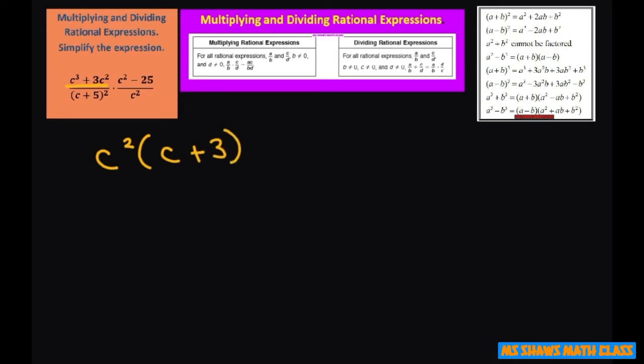Remember when you're factoring it's like dividing but you're not losing the divisor. So basically what you're doing is you're asking yourself, what can you divide these two by? And you can divide them by C squared.